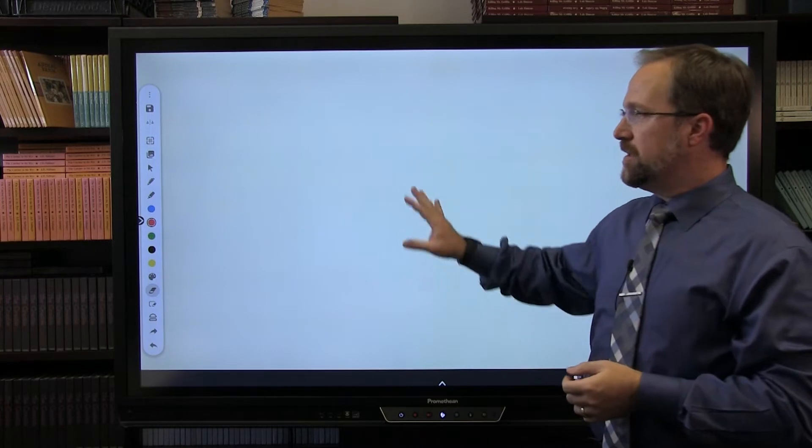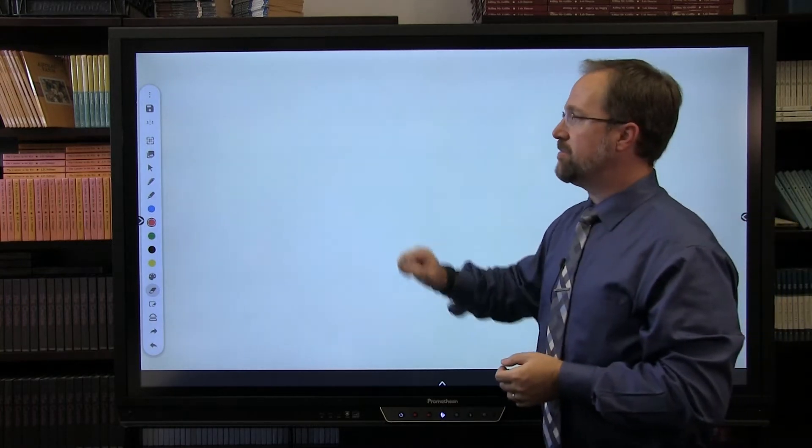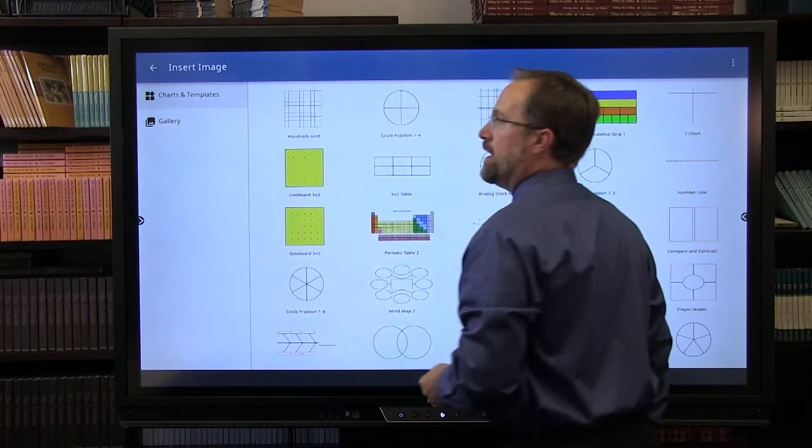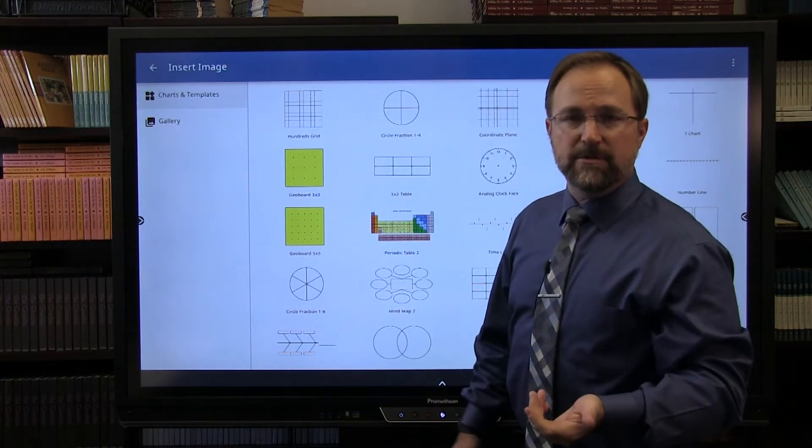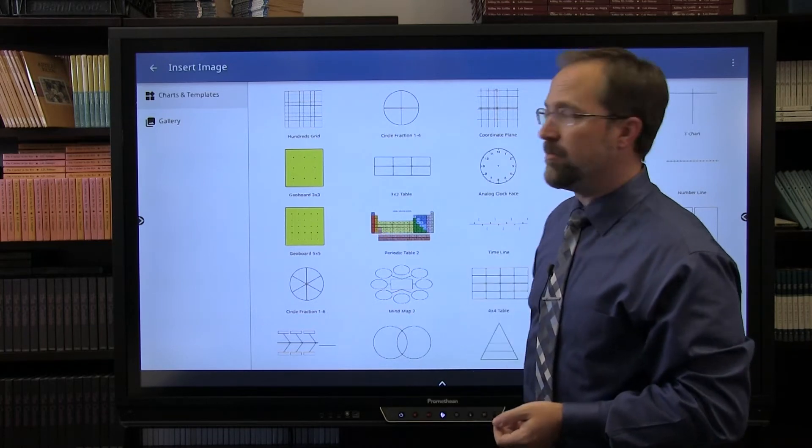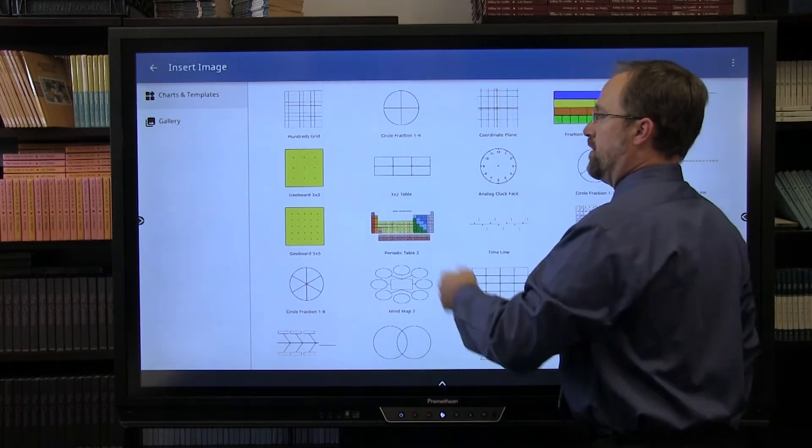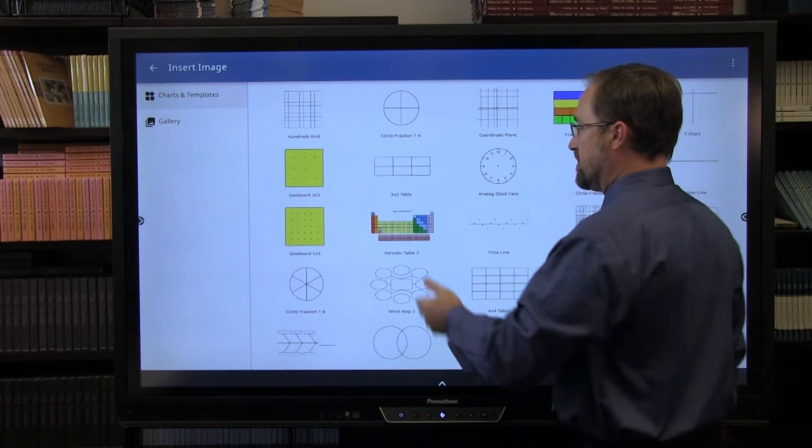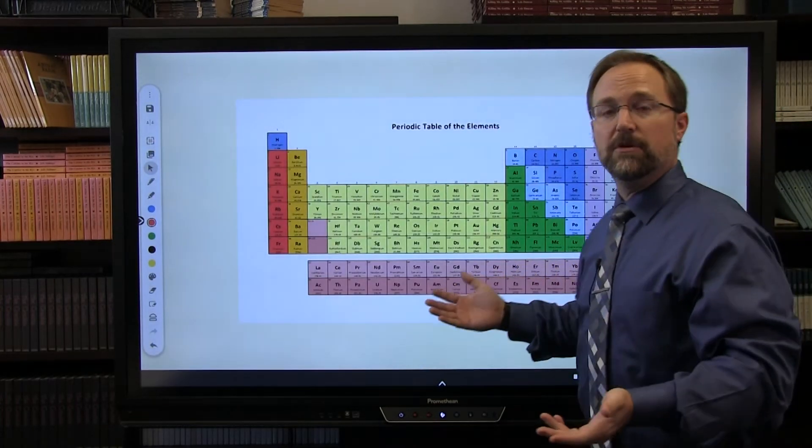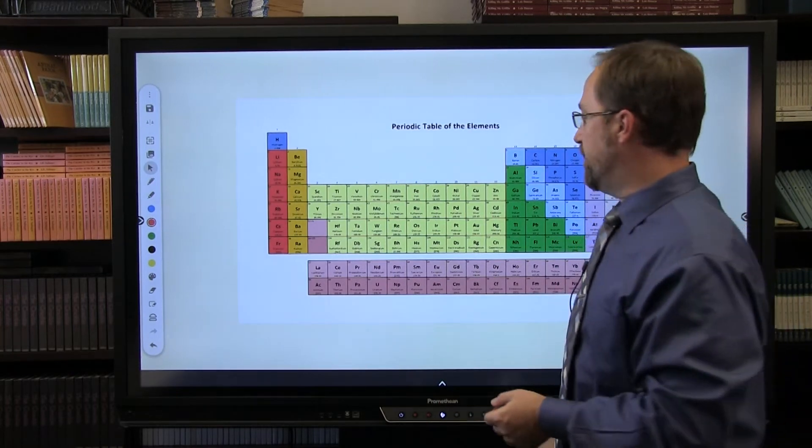So if you were to have your math options up here, you can feel free to play around with all of those options. Furthermore, before we depart this screen here, we do have some options in the image section. Here you can have your own gallery of images, but you can also use some charts and templates that have already been provided by Promethean. You'll notice that if you happen to be teaching chemistry, you can bring up a periodic table that's already been preloaded. There's also other charts and graphs that you can work off of.